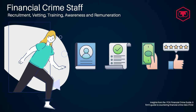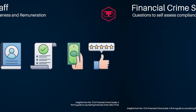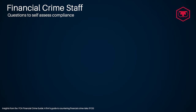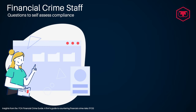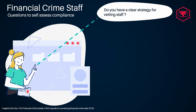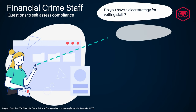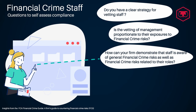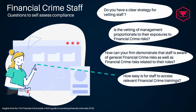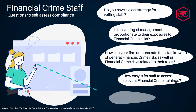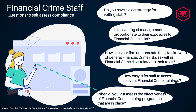Some questions to self-assess if your firm is in line with the regulatory compliance requirements on staff recruitment, vetting, training, awareness, and remuneration could be: Do you have a clear strategy for vetting staff? Is the vetting of management proportionate to their exposure to financial crime risks? How can your firm demonstrate that staff is aware of general financial crime risks, as well as financial crime risks related to their roles? How easy is it for staff to access relevant financial crime trainings? When did you last assess the effectiveness of financial crime training programs that are in place?